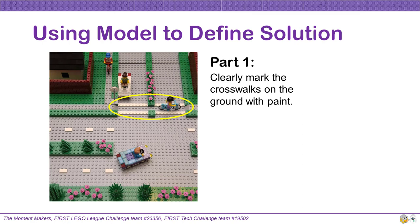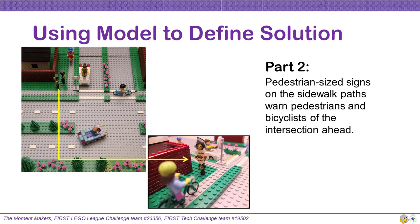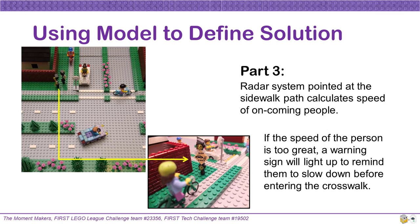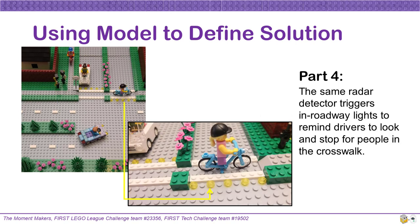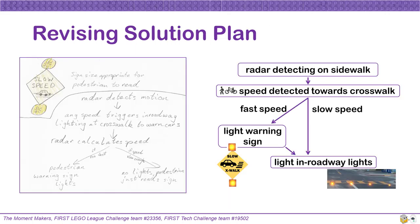We used our model to clearly describe our solution. Part one is to clearly mark the crosswalks on the ground with paint, as most crosswalks in our neighborhood are unmarked. Part two is to place pedestrian-sized signs on the sidewalk paths to warn pedestrians and bicyclists themselves of the intersections ahead. Part three is to install a radar system pointed at the sidewalk paths to calculate the speed of oncoming people. If the speed of the person is too great, warning lights on the pedestrian-sized sign will light up to remind them to slow down before entering the crosswalk. Part four is to install in-roadway lights in the crosswalk that will flash to warn cars when a person is detected moving towards the intersection by the same radar detector.